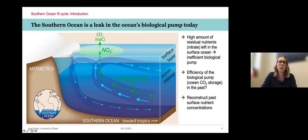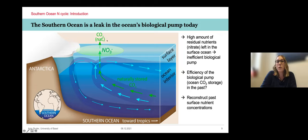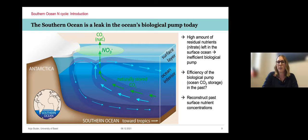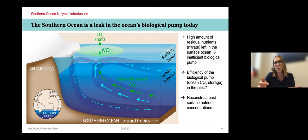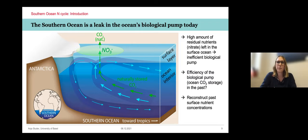If we want to understand how efficiently the biological pump has been working in the past, we can reconstruct the surface nitrate concentrations of the Southern Ocean to reconstruct the efficiency of the biological pump — how efficiently was the deep ocean taking up CO2. This is where the nitrogen isotopes come into play.